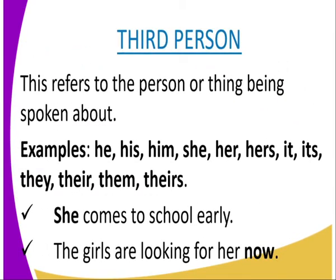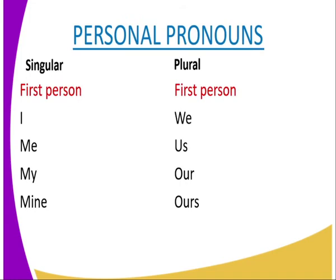The third person refers to the person or thing being spoken about. Pronouns representing the third person include: he, him, his, she, her, it, its, they, them, and their. Example: 'She comes to school early' — 'she' is a third person. 'The girls are looking for her now' — 'her' is in its third person form.